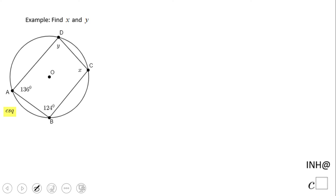Welcome or welcome back to In Help at C Squared. In this example, we need to find X and Y. X is the measure of angle C, and Y is the measure of angle D.